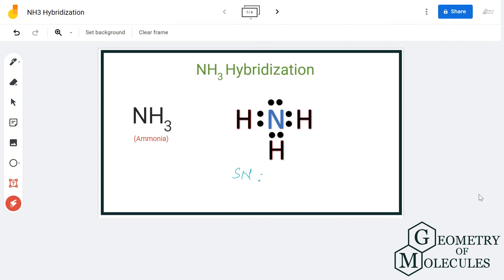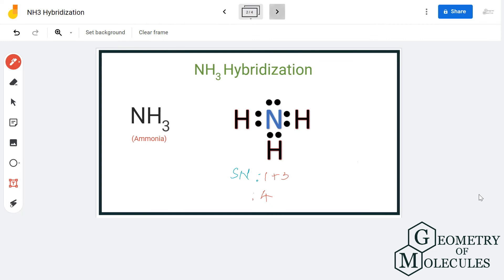There is one lone pair of electrons on the atom, plus there are three hydrogen atoms it is forming bonds with. So the steric number for NH3 is 4, and thus its hybridization is sp3.